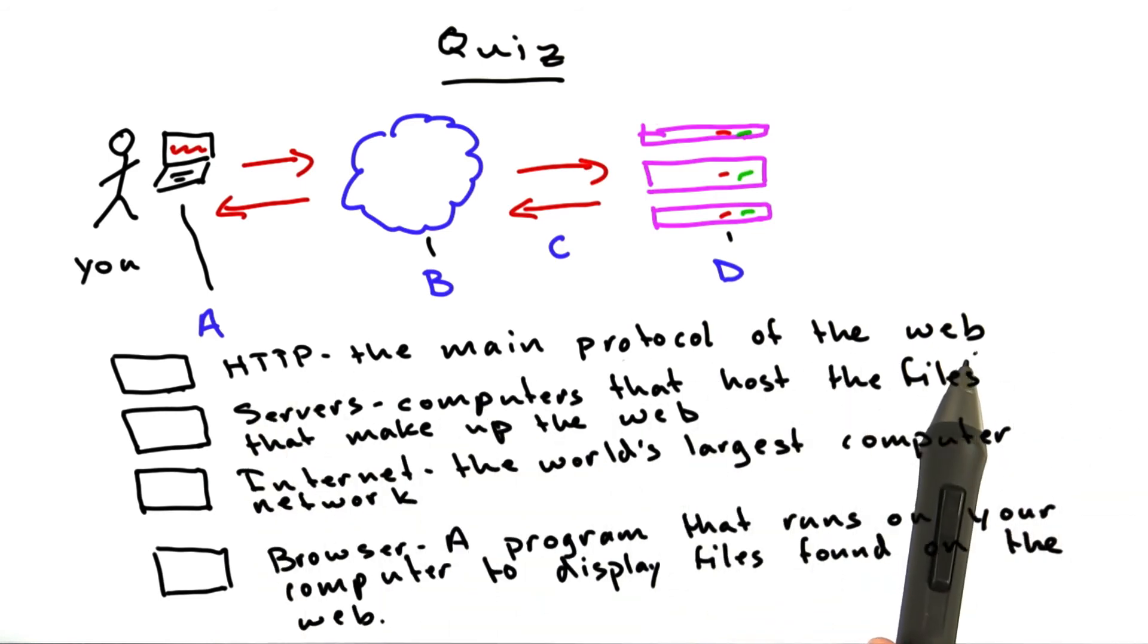the main protocol of the web; servers, computers that host the files that make up the web; the internet, the world's largest computer network; and your browser, a program that runs on your computer to display files found on the web.